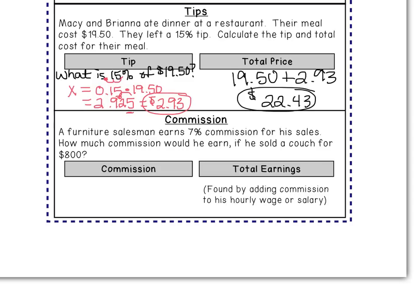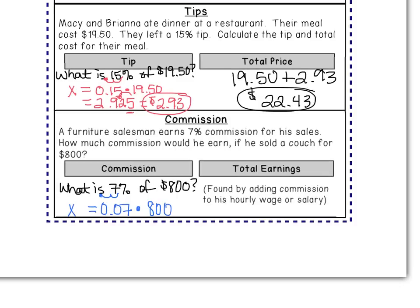Now let's do commission. Commission is what the salesman earns out of your sale. A furniture salesman earns 7% commission on his sales. How much commission would he earn if he sold a couch for $800? Ask: what is 7% of $800? Using the equation: x = 0.07 × 800. Multiplying those together, he makes $56 from that $800 sale.